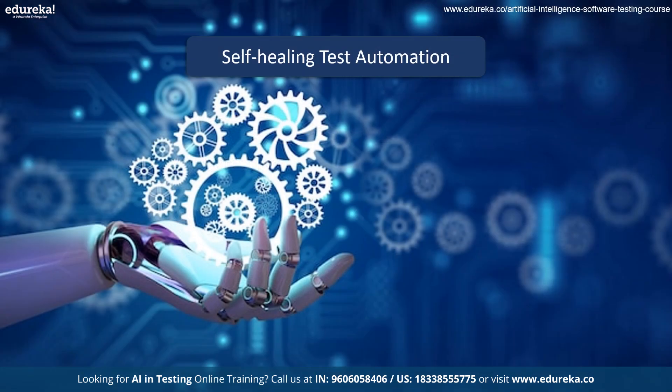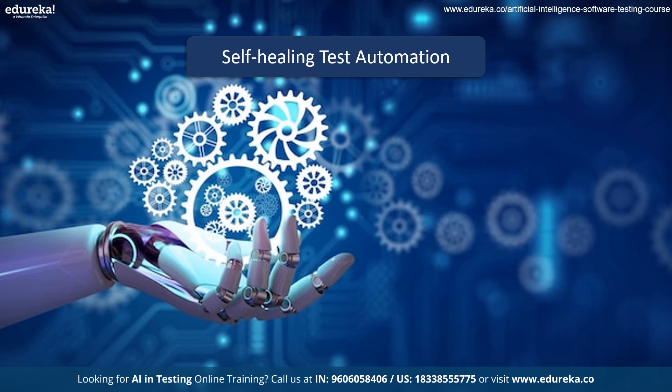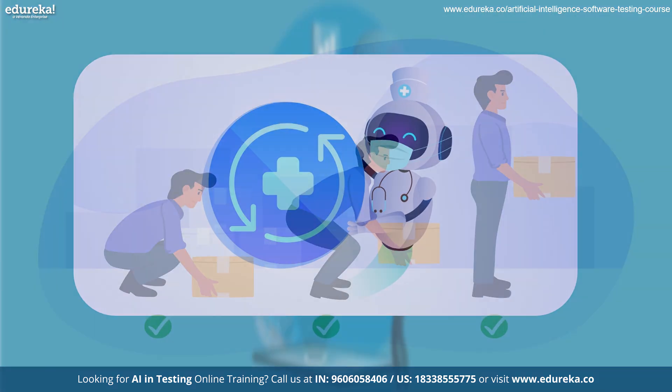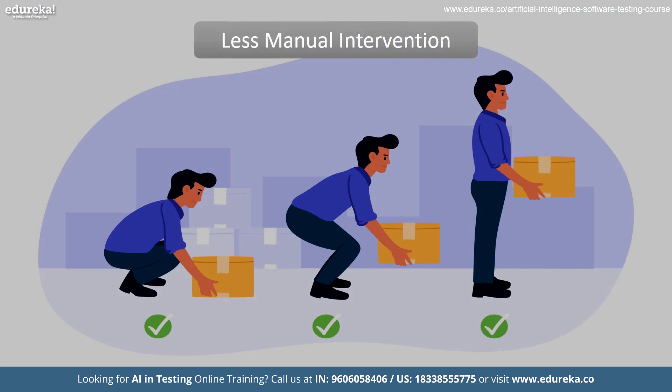The last method is self-healing automation. This involves automatic healing of test automation script breakage that may arise from object or property changes, which the AI enables through a self-healing process. The primary goal is to guarantee that less manual intervention is required and that the self-healing process is accelerated.